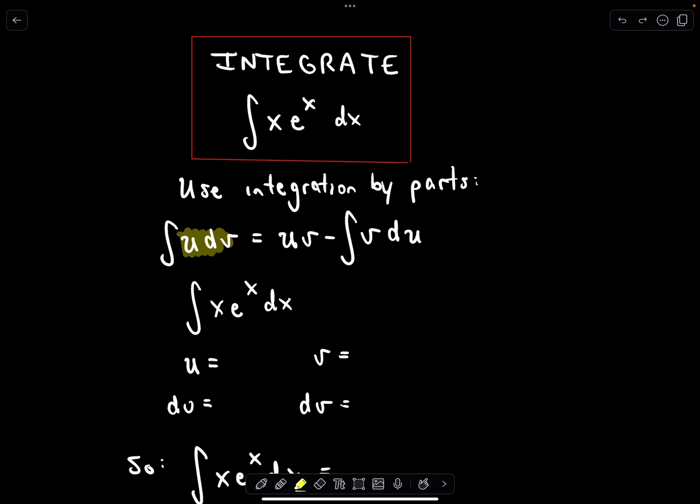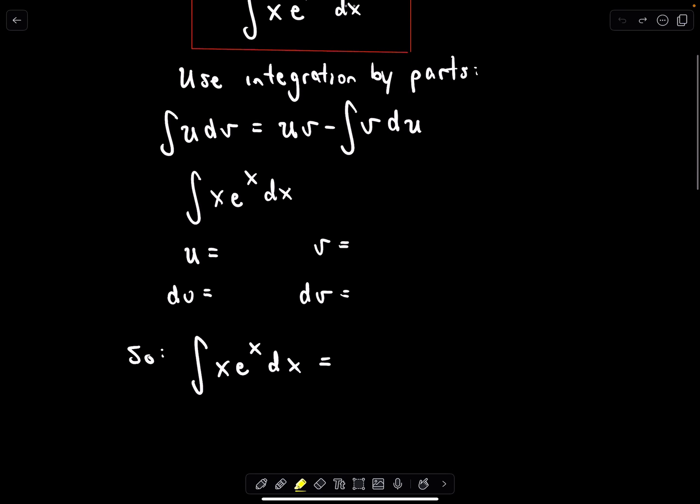So we've got our integral xe^x. What we have to do is pick something for u and something for dv.